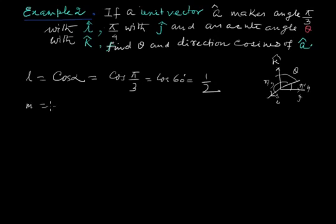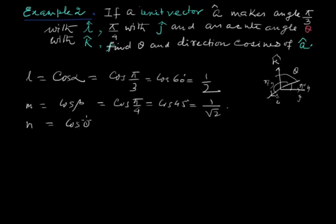And m, that is cos beta, is equal to cos pi by 4, cos 45 degrees, so the value is 1 by root 2. Now n is given as cos theta, but the value of theta we don't know and that we have to find out.